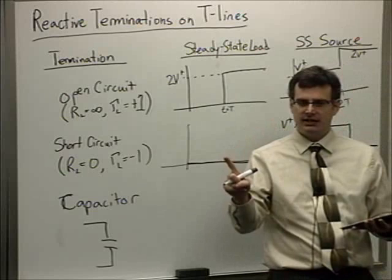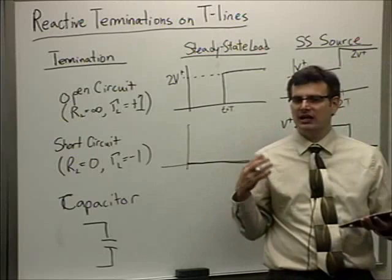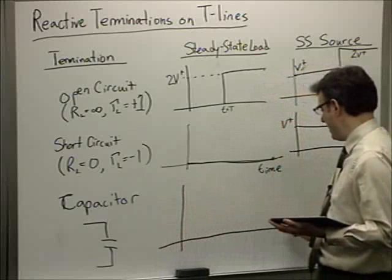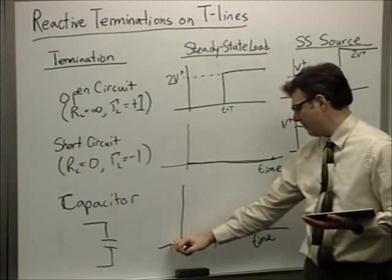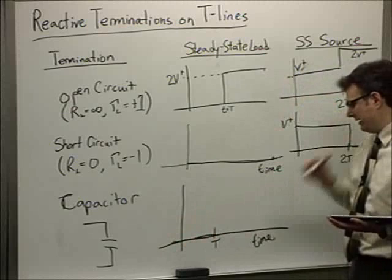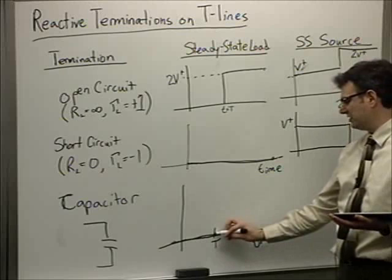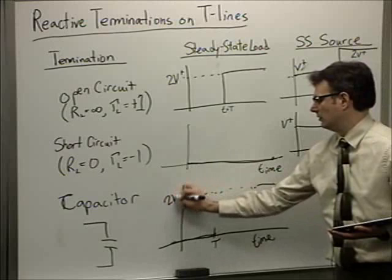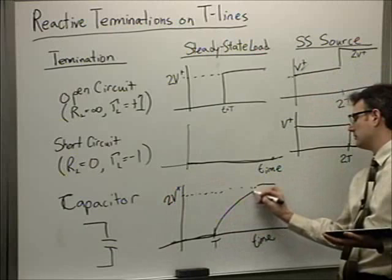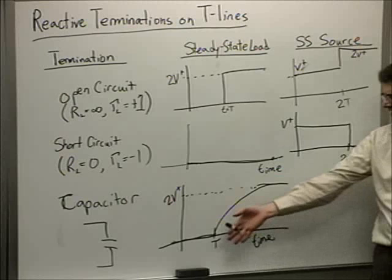Capacitors look like short circuits the instant they get connected to a DC circuit, then over time they look like open circuits. So without even doing a lot of math, at the load at time equals T, I'm going to see zero volts, then it looks like a short circuit, giving zero volts. In the long run it becomes an open circuit, where I should get 2V⁺. The transient asymptotically approaches 2V⁺ with a standard exponential decay.